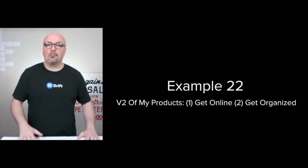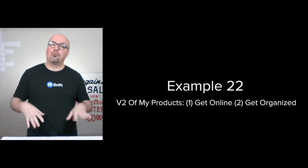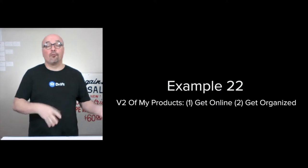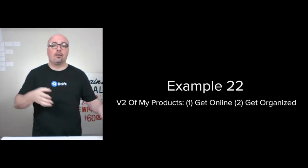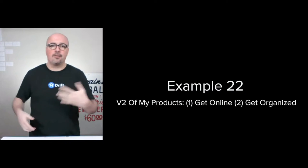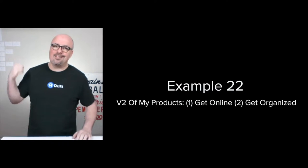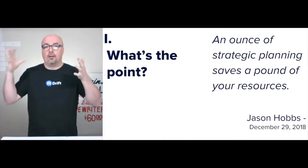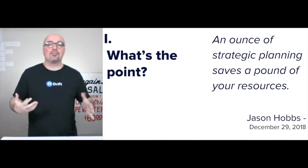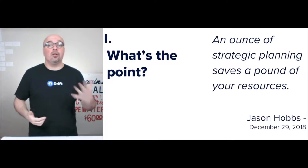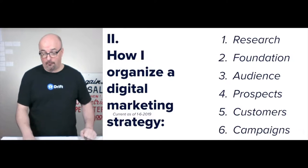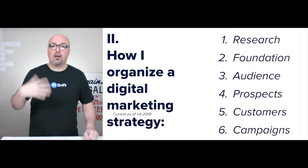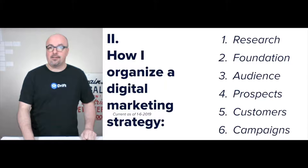Hi, I'm Jason Hobbs. This is example 22 of how I organize a digital marketing strategy. This time we're doing version two of my products, Get Online and Get Organized, which we visited in example 13. So what's the point of this strategy? It's an ounce of strategic planning saving you a pound of your resources, if not more. We're going to walk through each of the six steps.